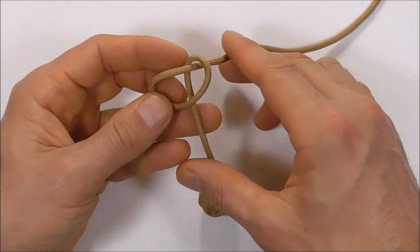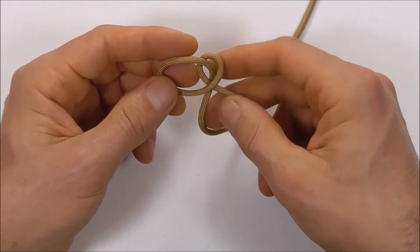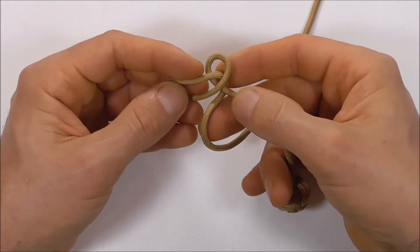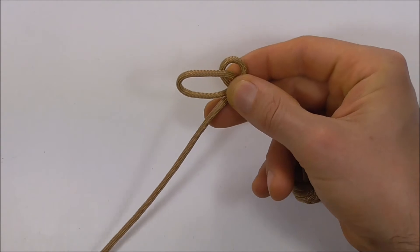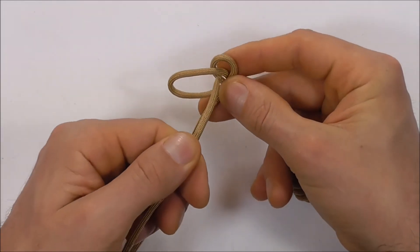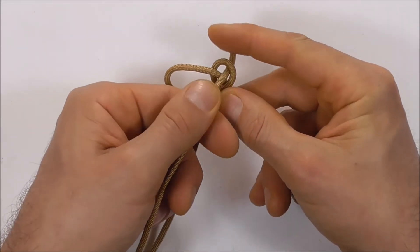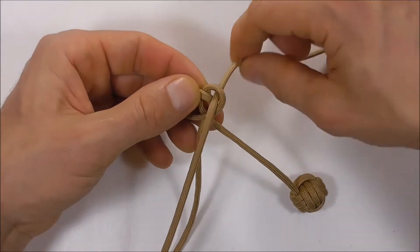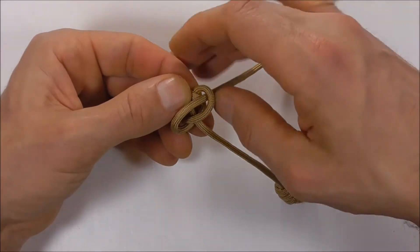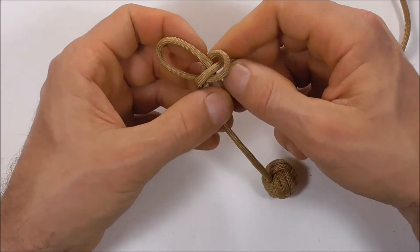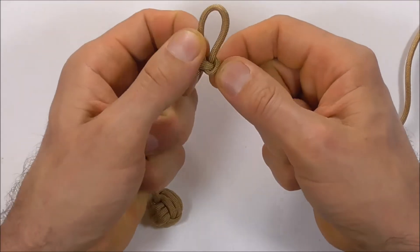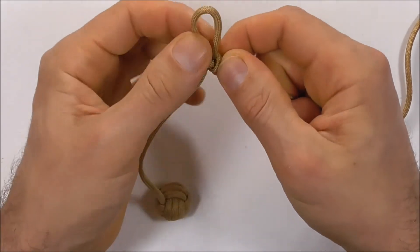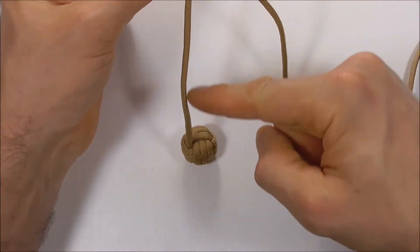Then take the other strand underneath, and I'm going to tuck this working end down through that top loop. We just need to pull that through. So that's our snake knot loop. Tighten that up and then we can start our French hitching down here.